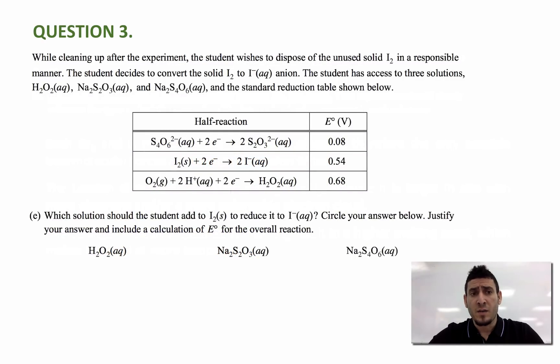Let's move on to the next part. It says, while cleaning up after the experiment, the student wishes to dispose of the unused solid I2 in a responsible manner. The student decides to convert the solid I2 to I minus anion. The student has access to three solutions, hydrogen peroxide, Na2S2O3, and Na2S4O6, and the standard reduction table shown below. The question says, which solution should the student add to I2 solid to reduce it to I minus aqueous? Circle your answer below, justify your answer, and include a calculation of E0 for the overall reaction.